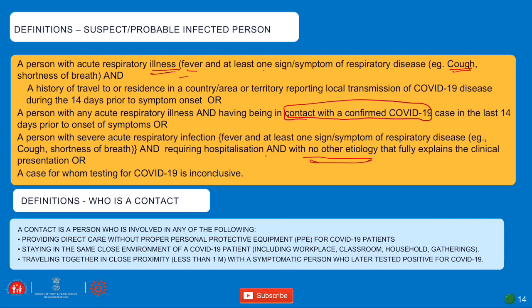A contact is a person who: provides direct care without proper PPE for a COVID-19 positive patient; stays in the same close environment such as workplaces, classrooms, houses, or gatherings; or travels in close proximity — less than one meter — with a symptomatic person. These three types of persons are known as contacts.